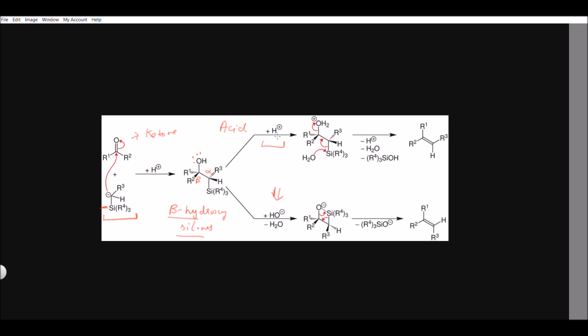Since we are adding acid in aqueous solution, water is present. Once H+ protonates the hydroxy group, this water attacks the silyl group, breaking the carbon-silicon bond. This leads to formation of a C=C double bond with elimination of water, and we get the final alkene — which is a cis alkene in this case.